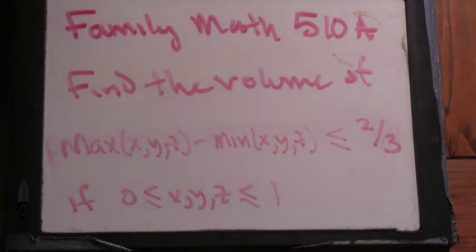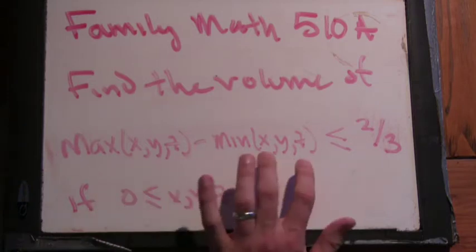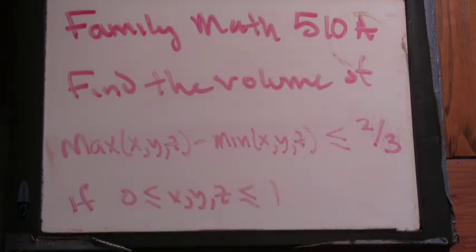But I've written it differently. I've said find the volume of this shape, maximum of x, y, z minus minimum of x, y, z is less than or equal to 2 thirds.